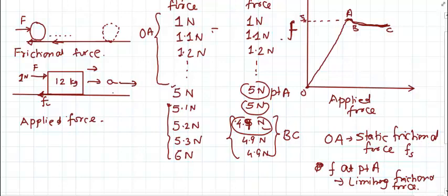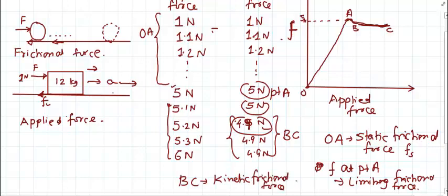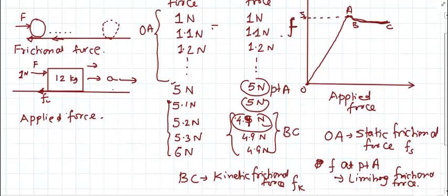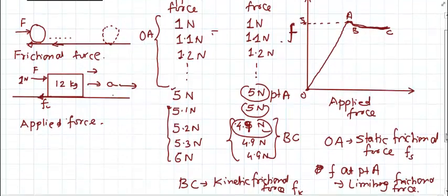After the limiting point the frictional force decreases and we have a straight line in part BC. In this part BC the object is moving, and therefore the frictional force is known as the kinetic frictional force, denoted by f with a kinetic suffix. This is how the frictional force keeps changing as we keep changing the applied force.